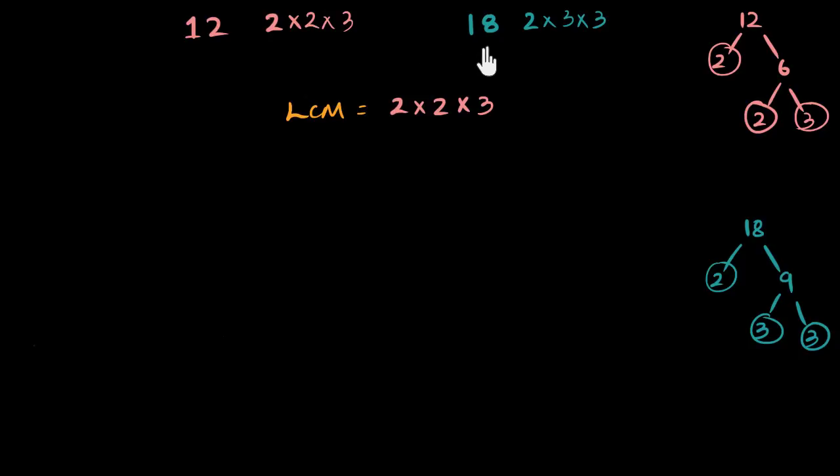And the LCM goes to 18 and asks, hey, what do you need? I'm trying to be your LCM. What do I need to have to be able to cover you? And 18 says, oh, me, I have one two. The LCM looks inside and says, that's great. I, in fact, have two twos. So no worries at all. I have an extra two, even though you don't need it.